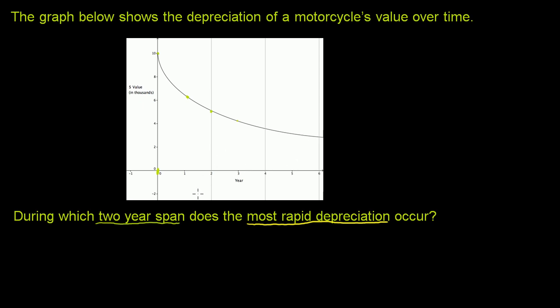well, the most rapid depreciation is occurring over the first two years, from zero to two years. Because you can see the curve is getting less and less steep the entire time. But it's most steep over those first two years.